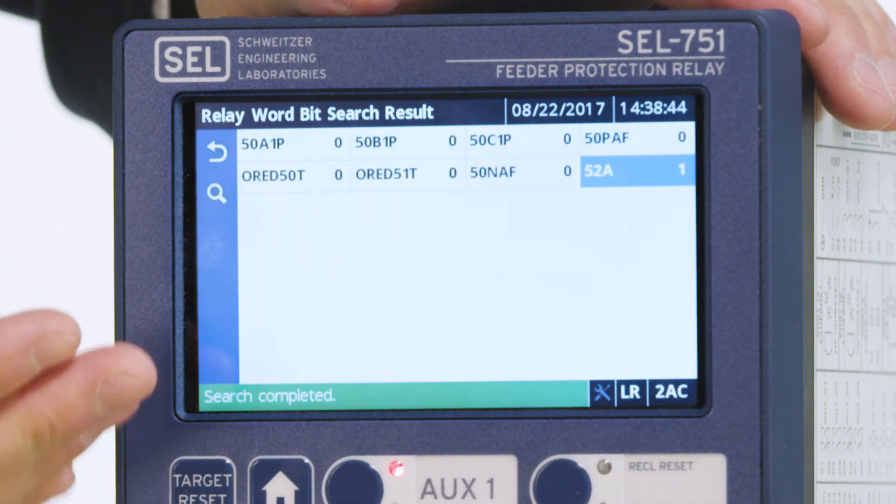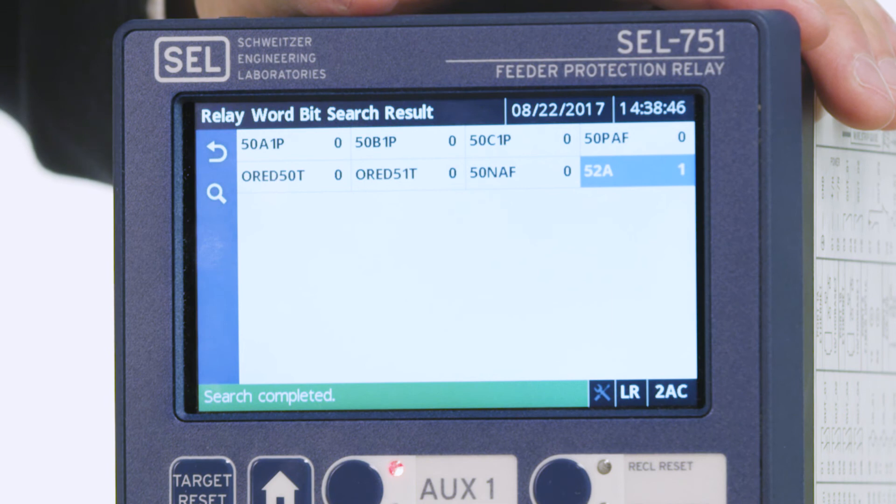As you can see from the search, the 52A is in a 1 or asserted state, showing that the breaker is in a closed state.